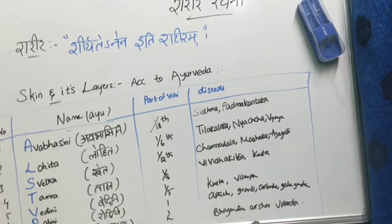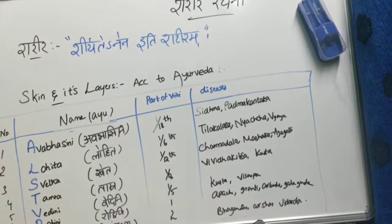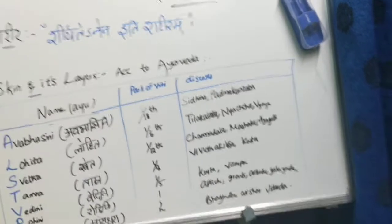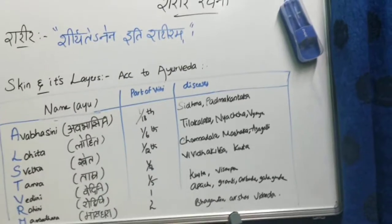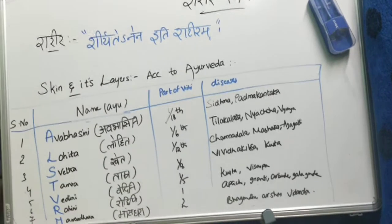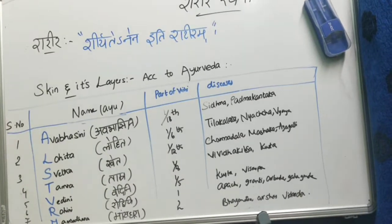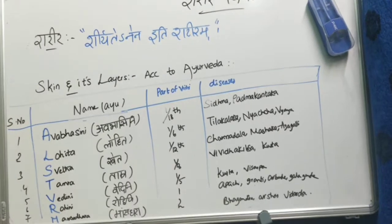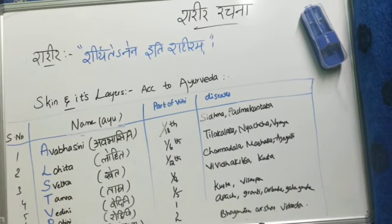Sharira — definition of Sharira: 'Shirita ane naithi shariram.' This is a simple shloka. The one which disintegrates continuously as time prolongs is considered as Sharira.